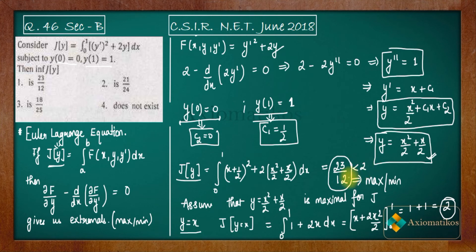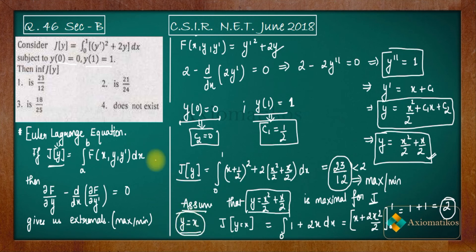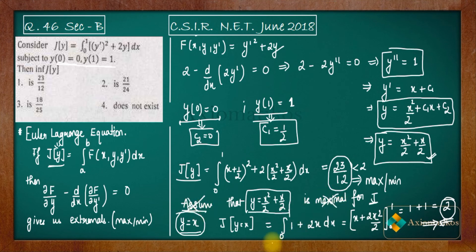So J[x] = 2, which is greater than 23/12. But we assumed y = x²/2 + x/2 was the maximum. If there exists another admissible function giving a larger value, that's a contradiction. So our assumption that it is maxima is wrong. Since the extremal is either a max or a min, it must be the minimum. Therefore it is the infimum of J[y].